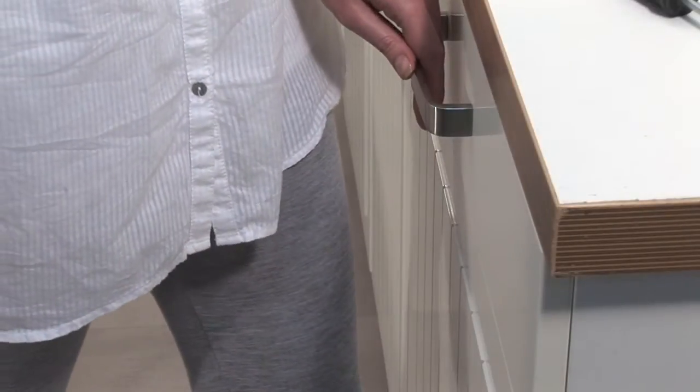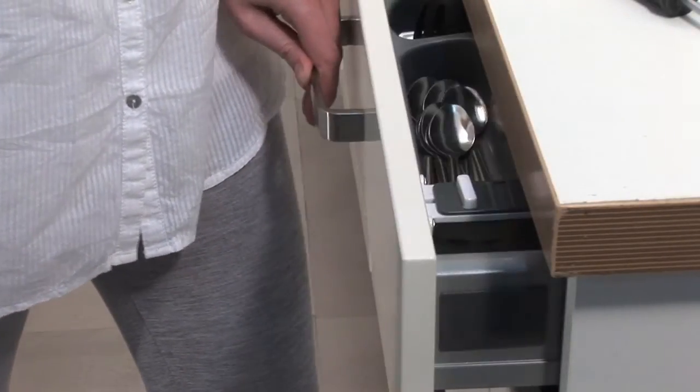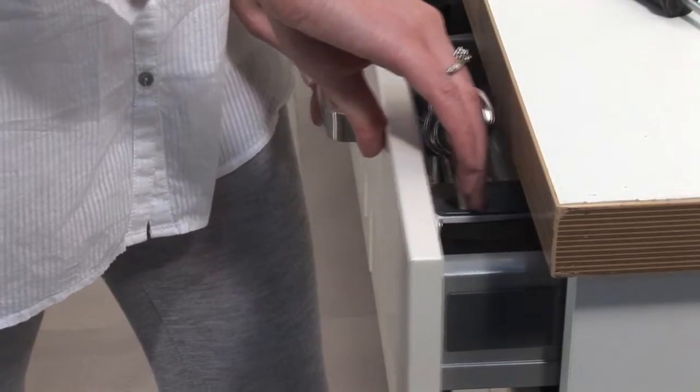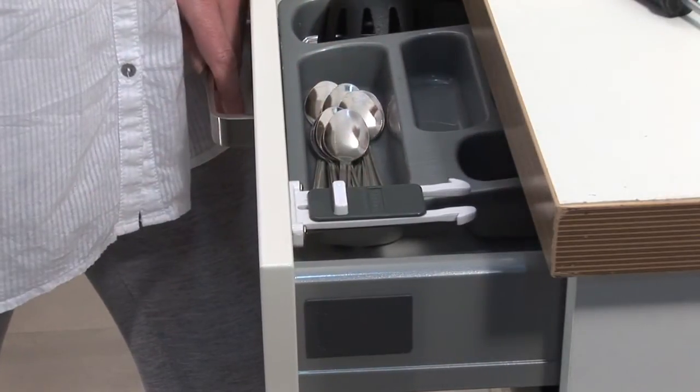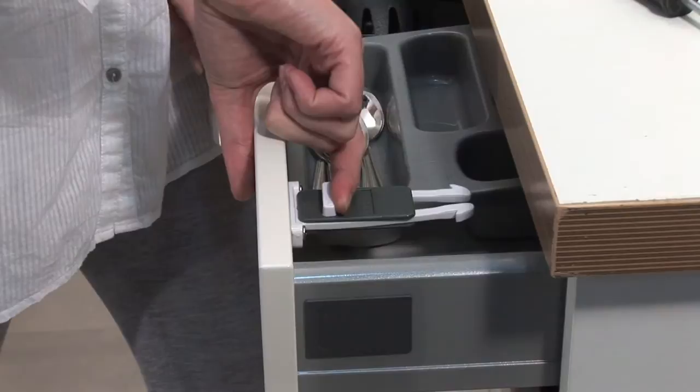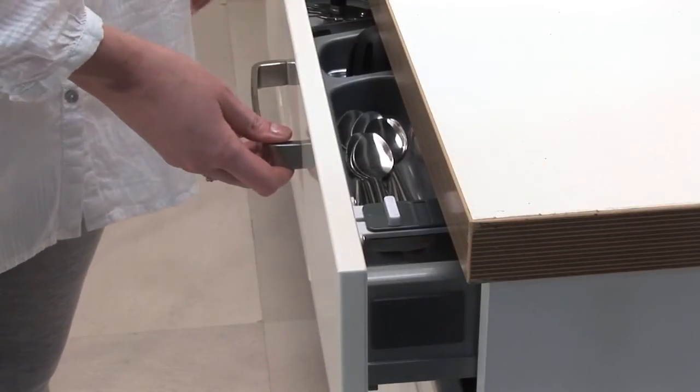To use the ExtraGuard dual locking draw latch with the single lock for general everyday use, ensure the button is in the neutral position. To gain access to the drawer, simply pull the button back to release the latch.